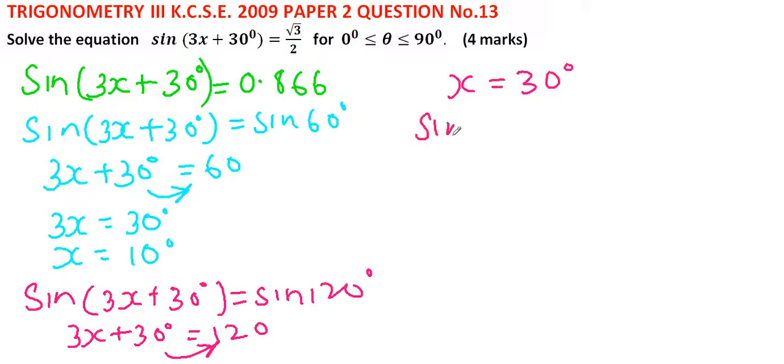The other angle is 420°, that is sin(3x + 30°) = sin(360° + 60°). So this means 3x + 30° = 420°.